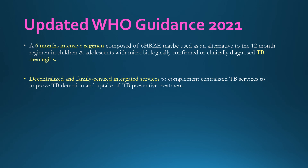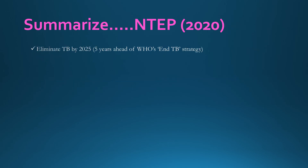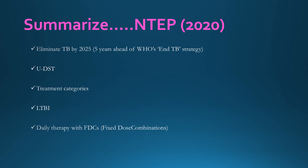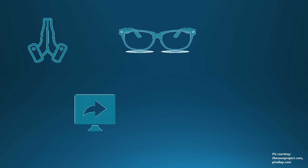To summarize, NTEP 2020 aims at eliminating tuberculosis by 2025, five years ahead of WHO's End TB Strategy. It is based on universal drug sensitivity testing, with treatment categories of drug sensitive and drug resistant. Diagnosis and treatment of latent tuberculosis infection has been stressed upon, and fixed dose combinations are recommended for daily therapy in children.